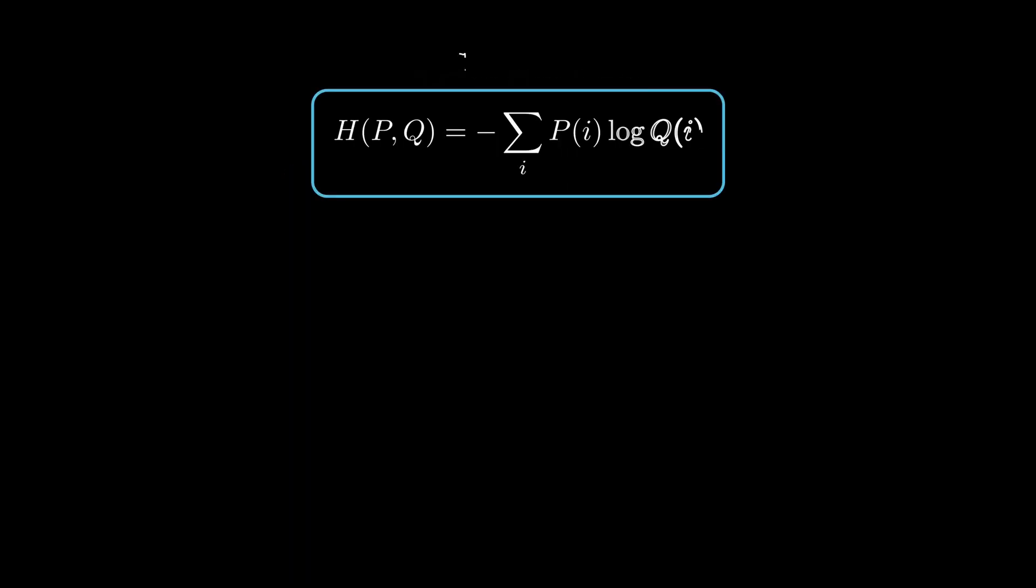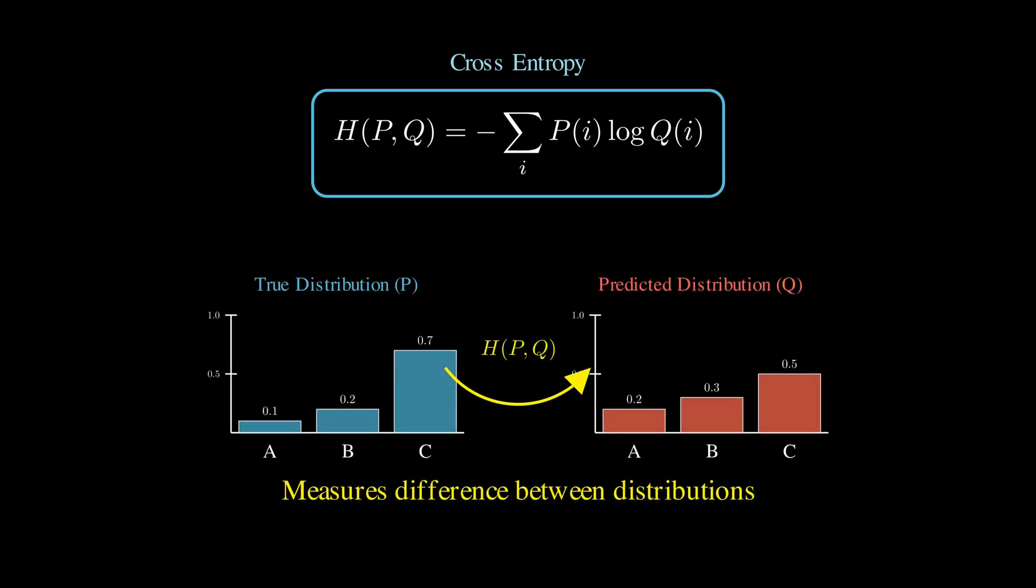It's a concept from information theory that measures the difference between two probability distributions. The formula is H(P,Q) = -Σ P(i) log Q(i), where P is our true distribution and Q is our predicted distribution.